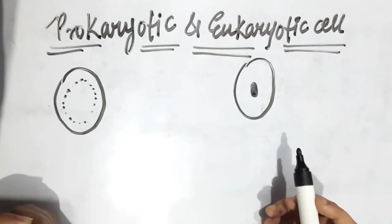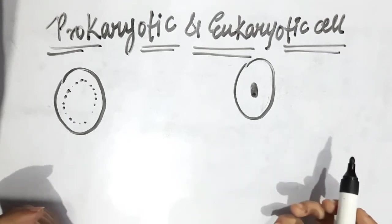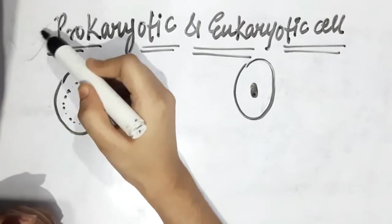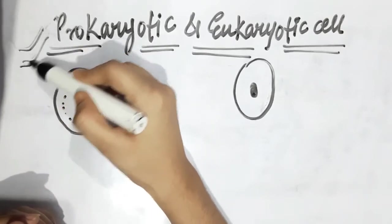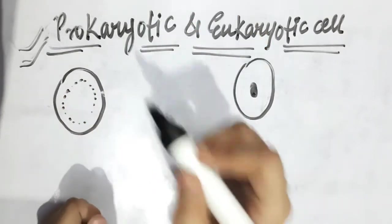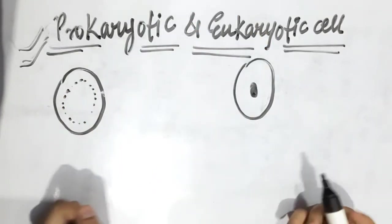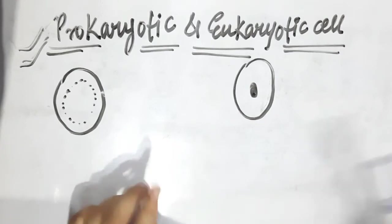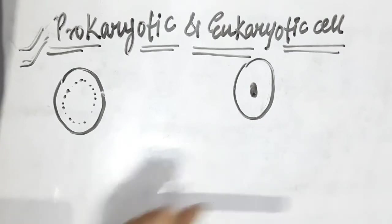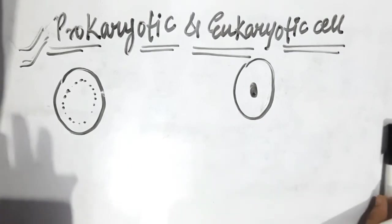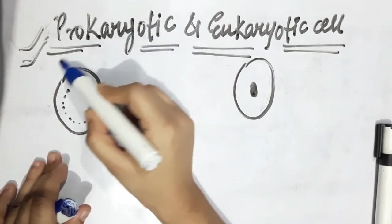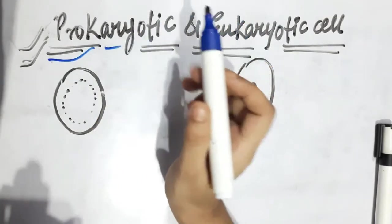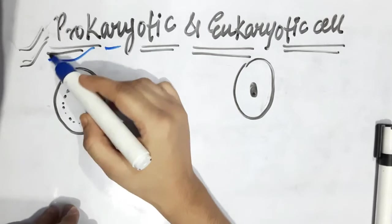Our next topic is prokaryotic and eukaryotic cells. What do these two names mean? I can explain them in a very simple way in biology. You can just break the words apart and you can easily understand their meaning.